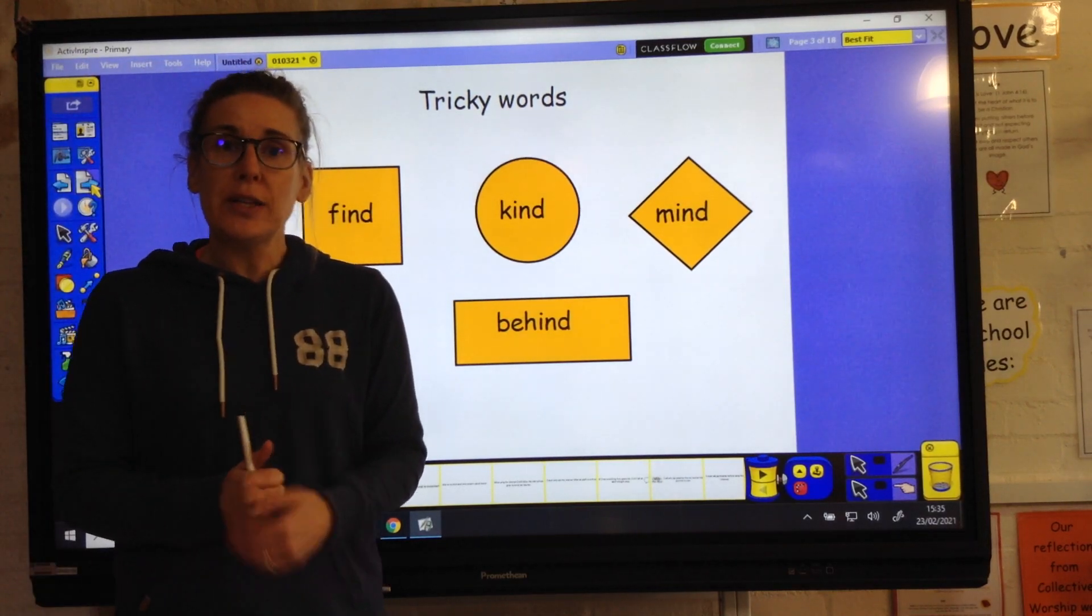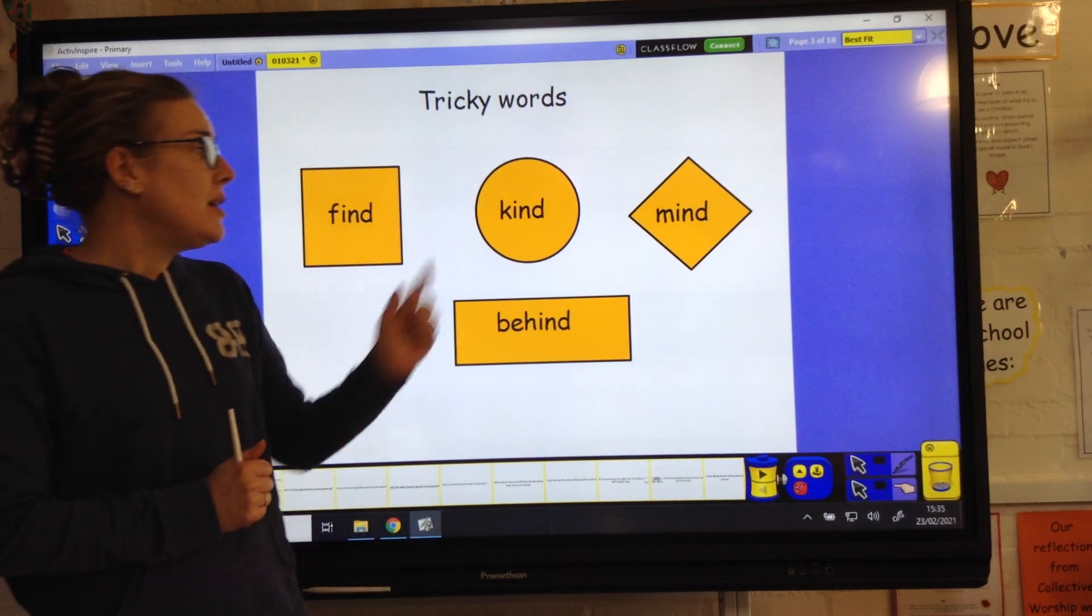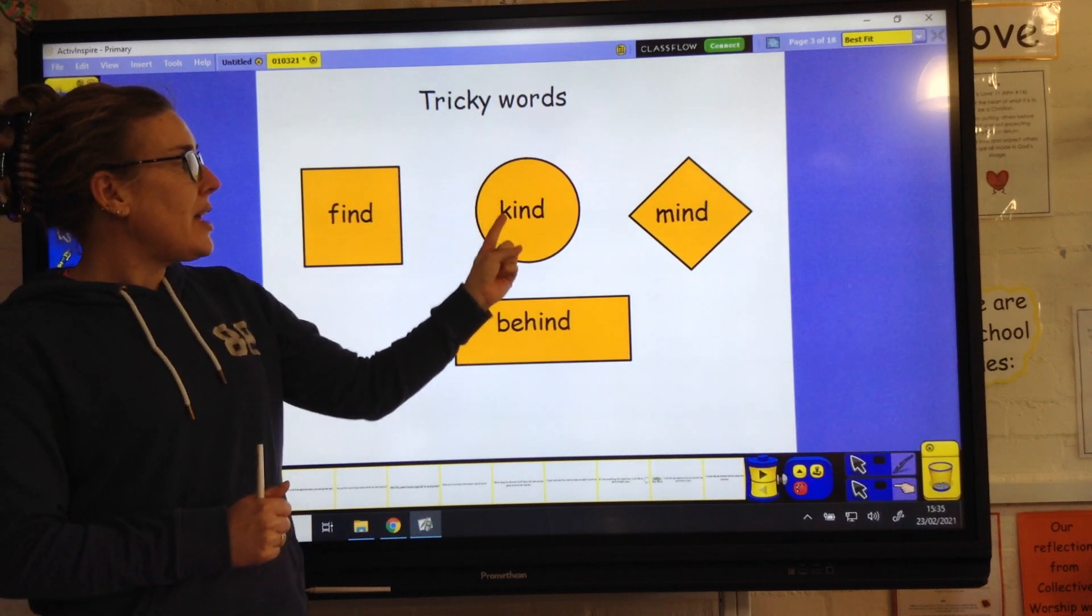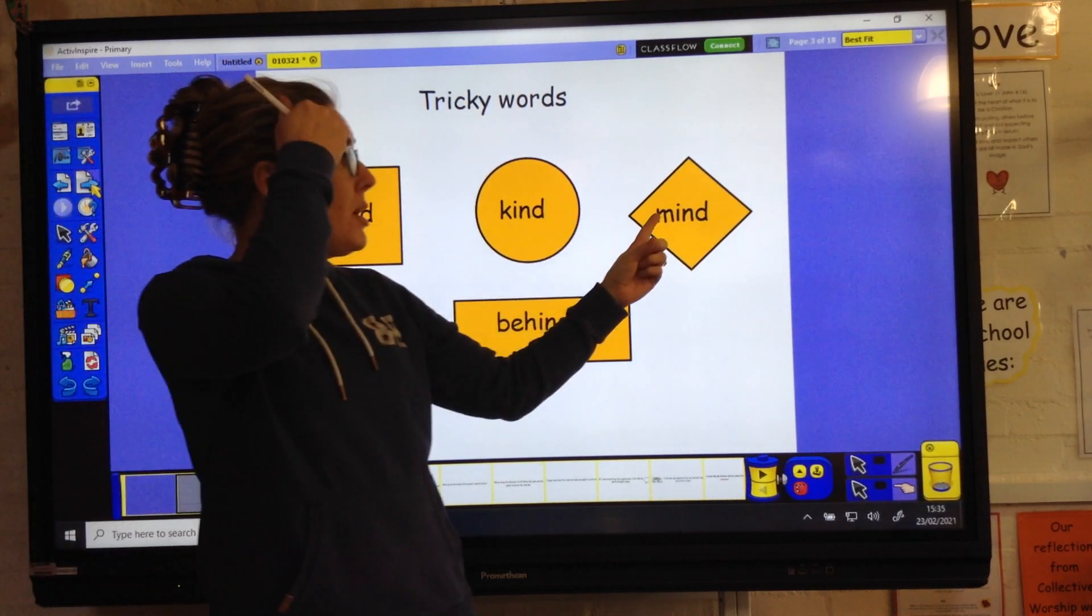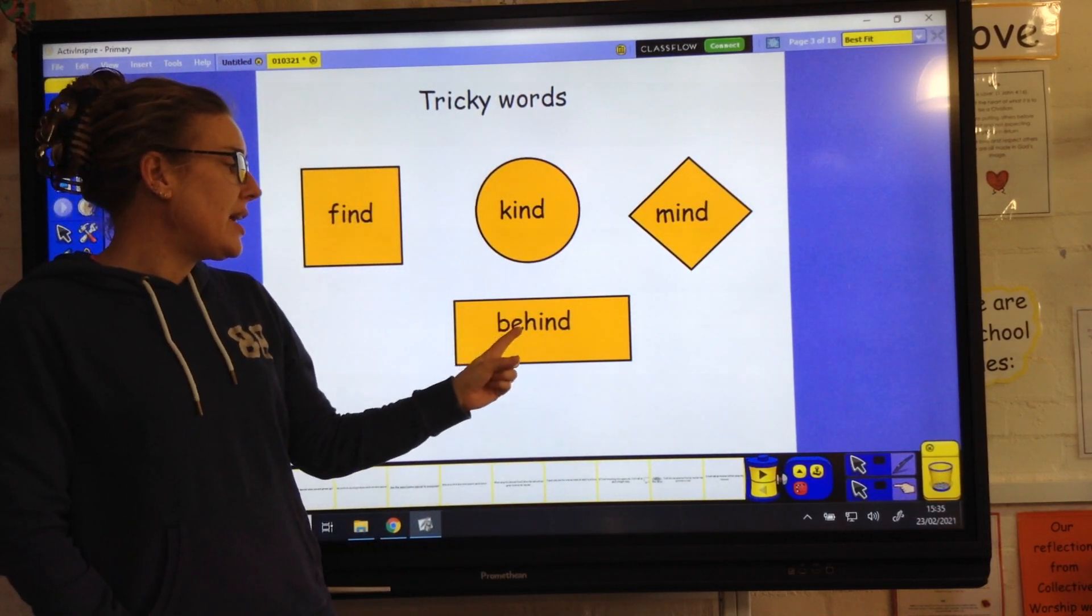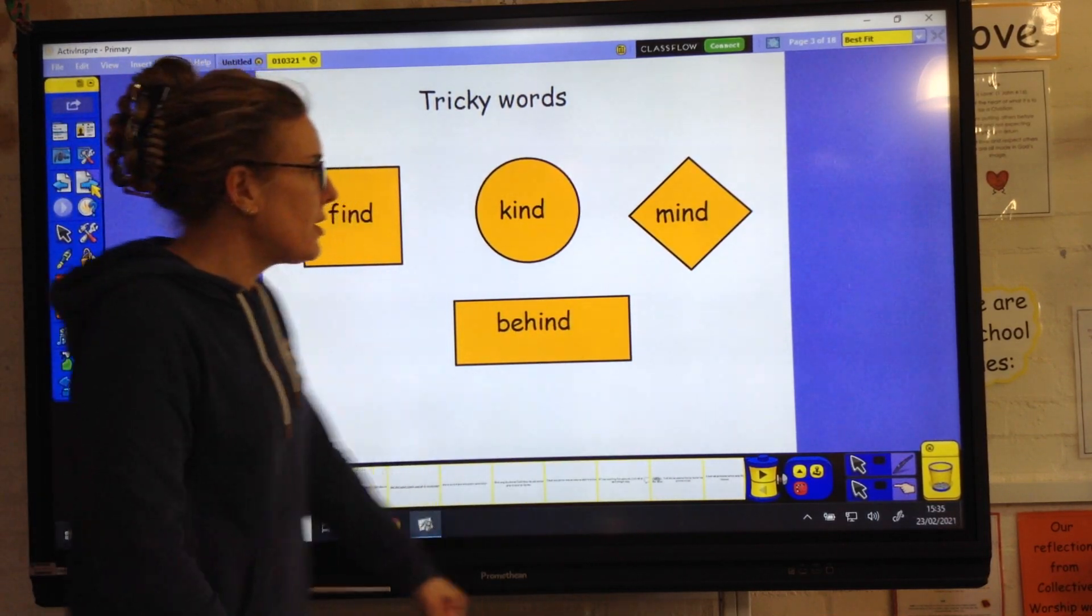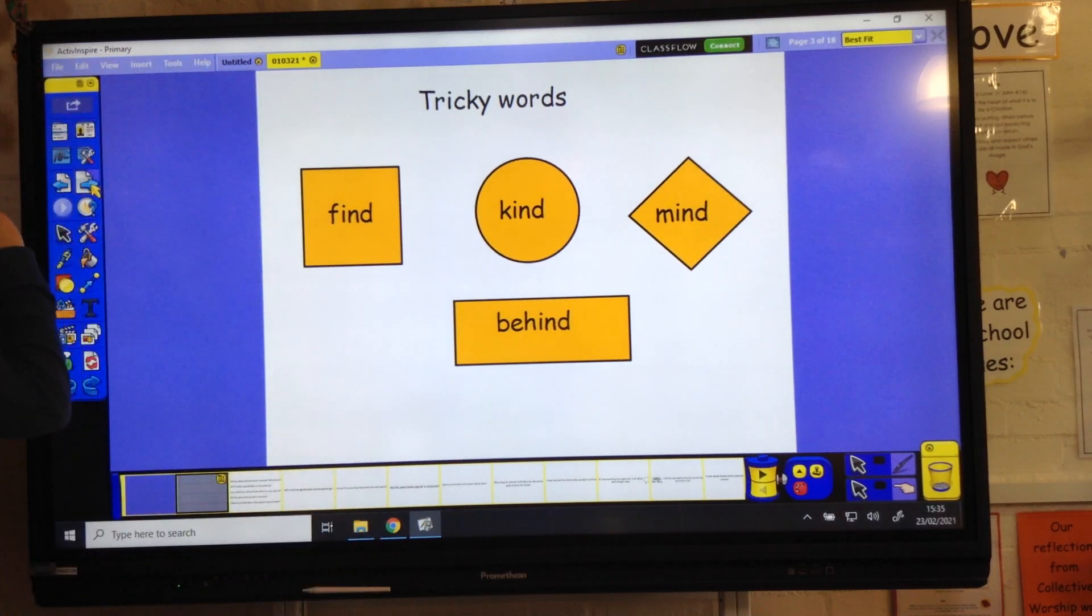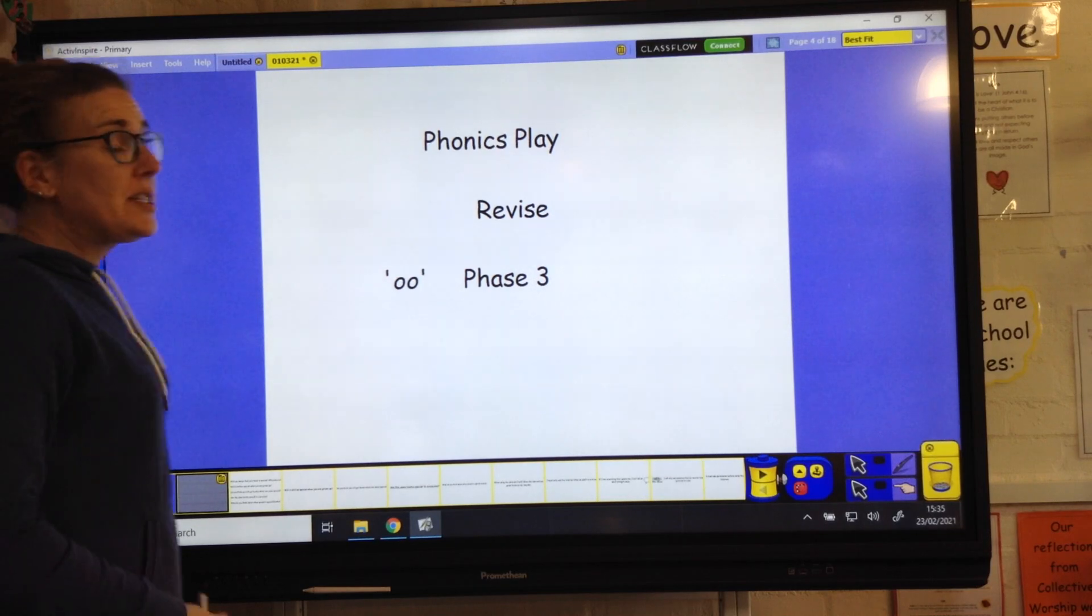The first word is find, F-I-N-D, then kind, K-I-N-D, mind, M-I-N-D and behind, B-E-H-I-N-D. Have a go at reading those and make sure you're writing them and practice that.